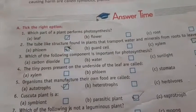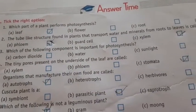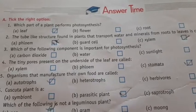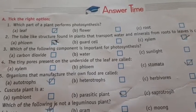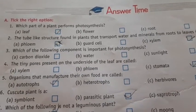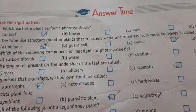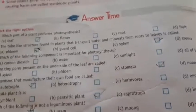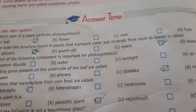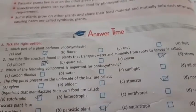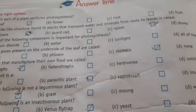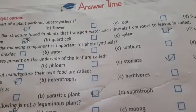Which of the following components is important for photosynthesis? The options are carbon dioxide, water, sunlight, and all of these. There are three things needed for photosynthesis, so option number 4 — all of these — is the correct answer here.